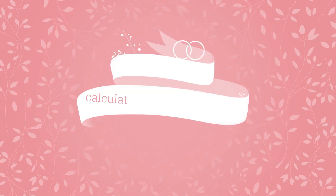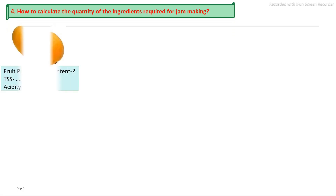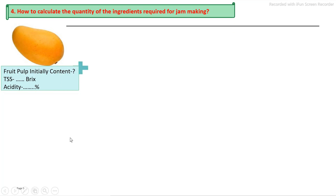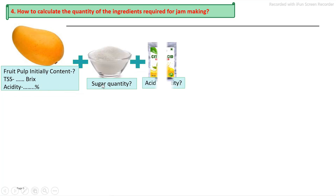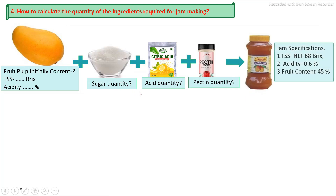How to calculate the proportion of ingredients used in the jam production process? You can see that the first ingredient is the fruit pulp or fruit juice or whole fruit. The second ingredient is sugar. Initially, the brix and acidity of the fruit are checked. As per the initial level, you add the required amount of sugar and citric acid. The addition of pectin also depends on the initial pectin quantity in the fruit pulp. Finally, we get good quality jam.